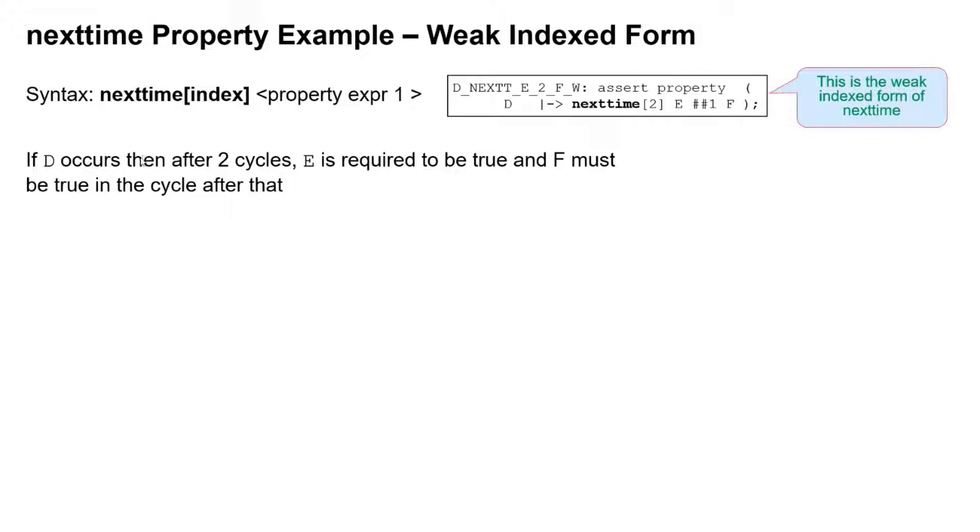So what this is claiming in this property is if d occurs, then after two cycles, that's because we've got an index of two here, e is required to be true, and then f must be true in the cycle after that.